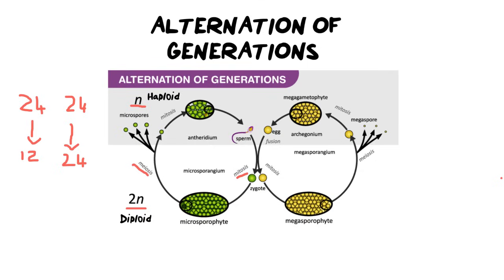So the basics of alternation of generations works like this. We are going to start off with our adult structures — we're going to start down here at the megasporophyte and microsporophytes, which represent the male and female. The female is the megasporophyte and the microsporophyte is the male side of this diagram. These are where we are going to produce our spores — whenever you see 'sporophyte,' think of spores. Inside our sporophytes, some cells will undergo meiosis.